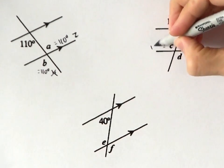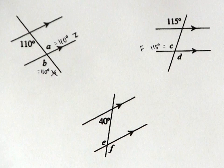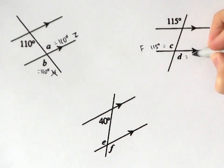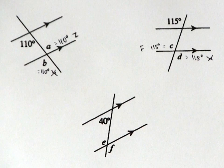C is corresponding with the 115 degrees, so that's also how big C is — see the upside-down F? And then D must also be 115 degrees. It's vertically opposite C, but it's also an alternate angle with the original 115. It's an external alternate angle.